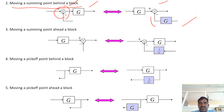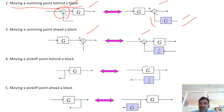Now coming to moving a summing point ahead of a block. Previously we moved the summing point after the block; now we have to move it before the block. In that case we consider 1 by G. So moving behind or after — these are the two cases.